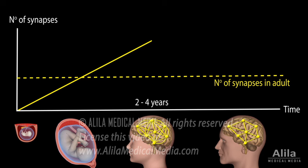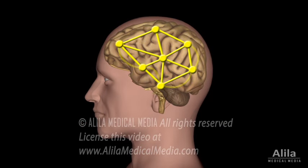This is when the elimination of excess neuronal synapses, known as synaptic pruning, begins. The process removes roughly half of all synapses and occurs mainly during adolescence, but may continue well into young adulthood. By getting rid of unnecessary connections, synaptic pruning helps to refine neural circuits and increase network efficiency.